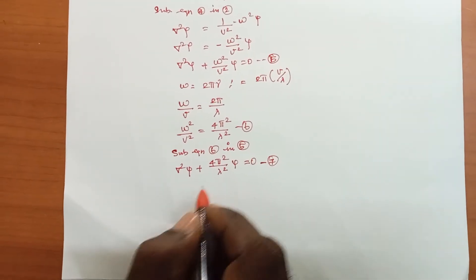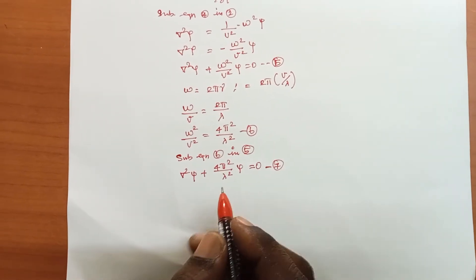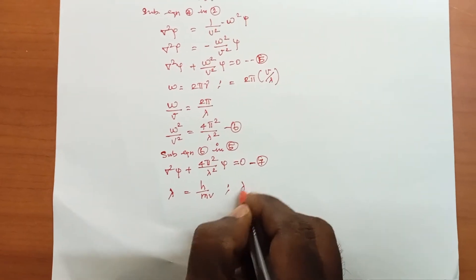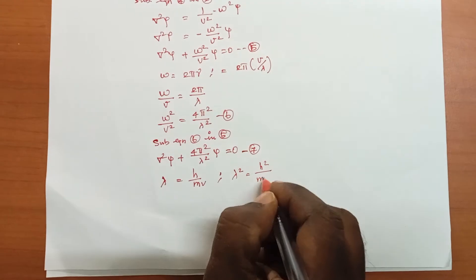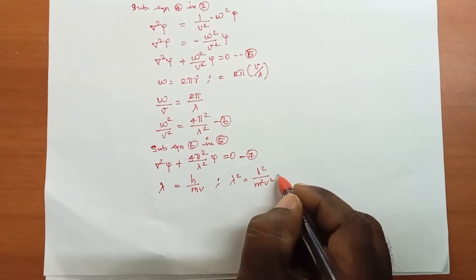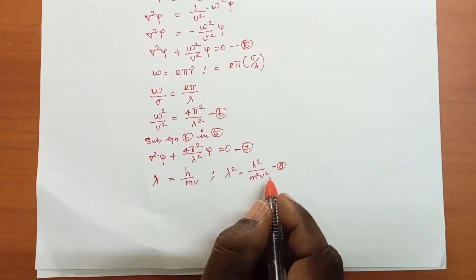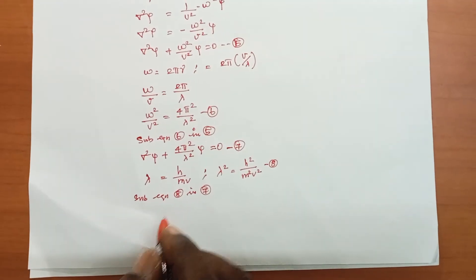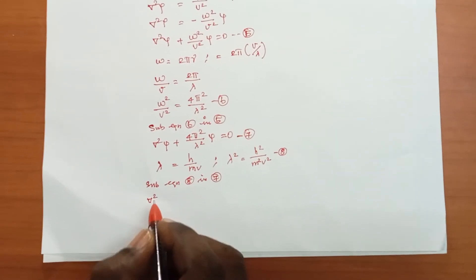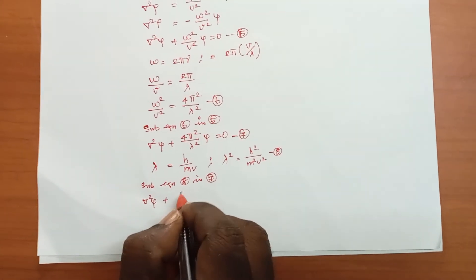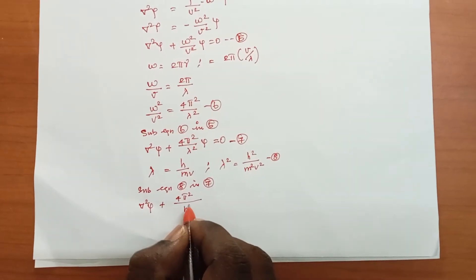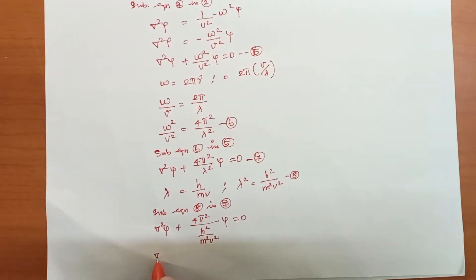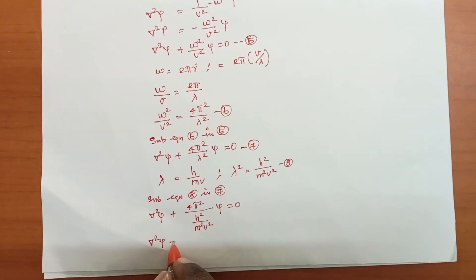We substitute the de Broglie wavelength: λ = h/mv, so λ² = h²/m²v². This is equation number 8. Substituting equation 8 into equation 7: ∇²ψ + (4π²m²v²/h²)ψ = 0. This is equation number 9.